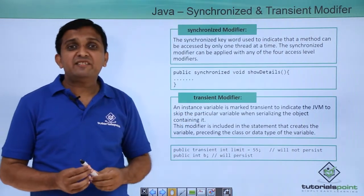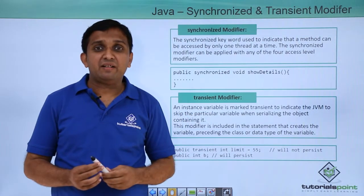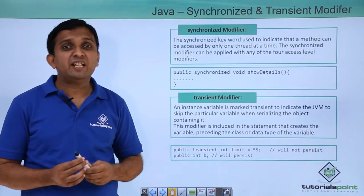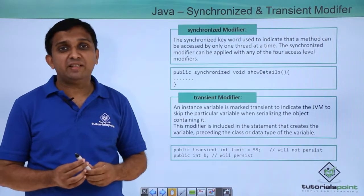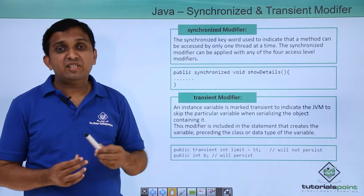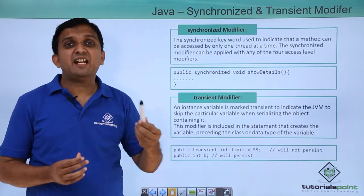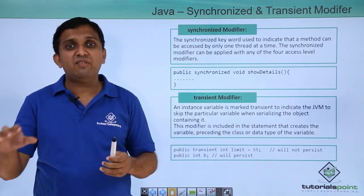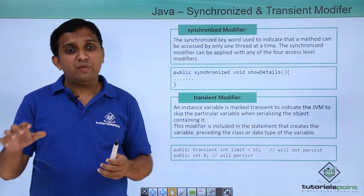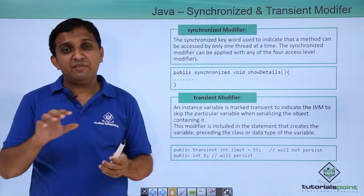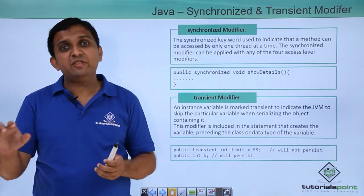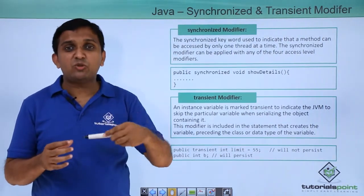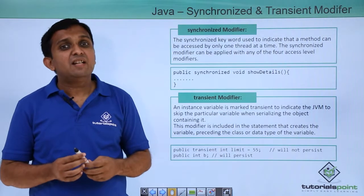The other modifier is transient modifier. This modifier is used in case of serializing the object. Serialization means writing an object into the file. When I write an object into the file or store an object into the file, basically I am storing all the attributes of the object.